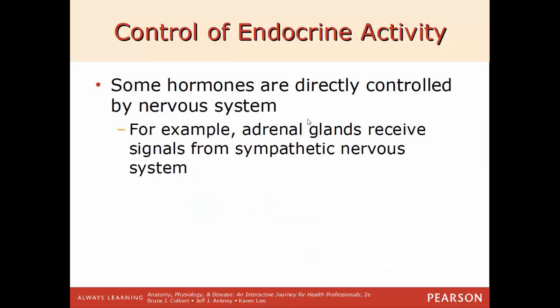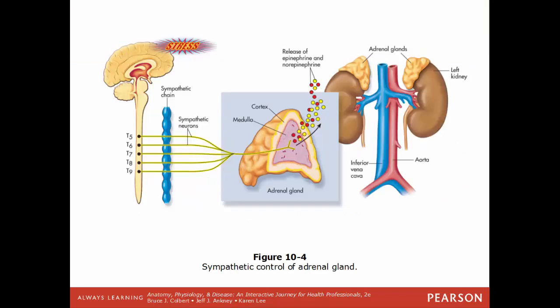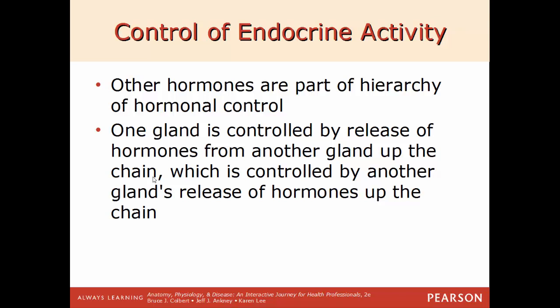Some hormones are directly controlled by the nervous system. For example, the adrenal glands receive signals directly from the sympathetic nervous system. When the sympathetic nervous system is active, it sends signals to the adrenal glands to release epinephrine and norepinephrine — also known as adrenaline and noradrenaline — prolonging the effect of sympathetic activity during stressful situations. The adrenals sit on top of the kidneys and have two regions: the cortex and the medulla, each making different types of hormones. Epinephrine and norepinephrine come from the medulla and are controlled by the sympathetic nervous system.